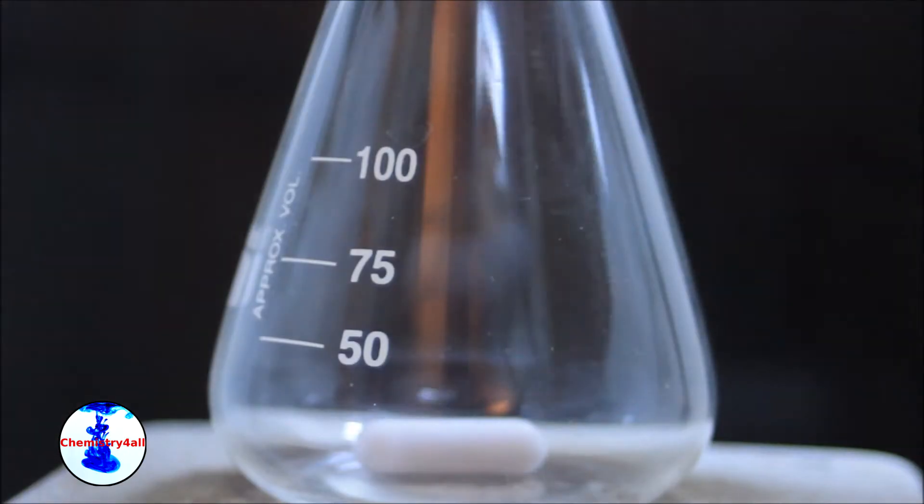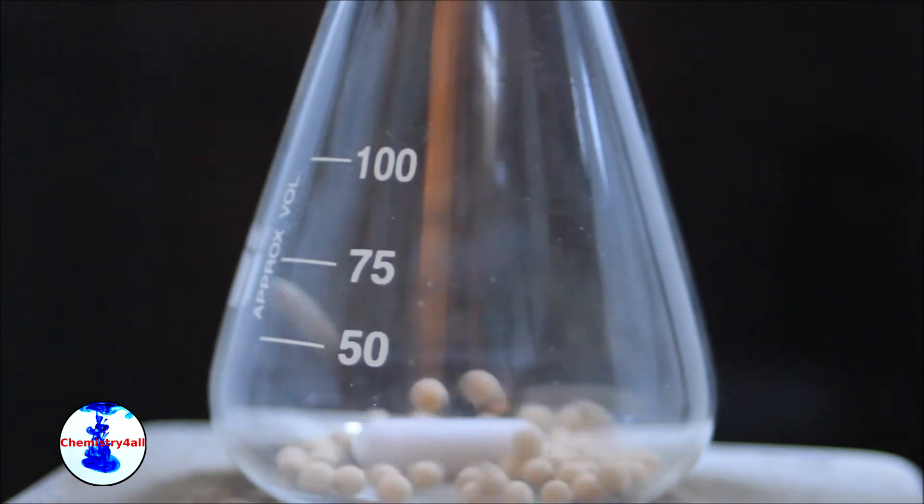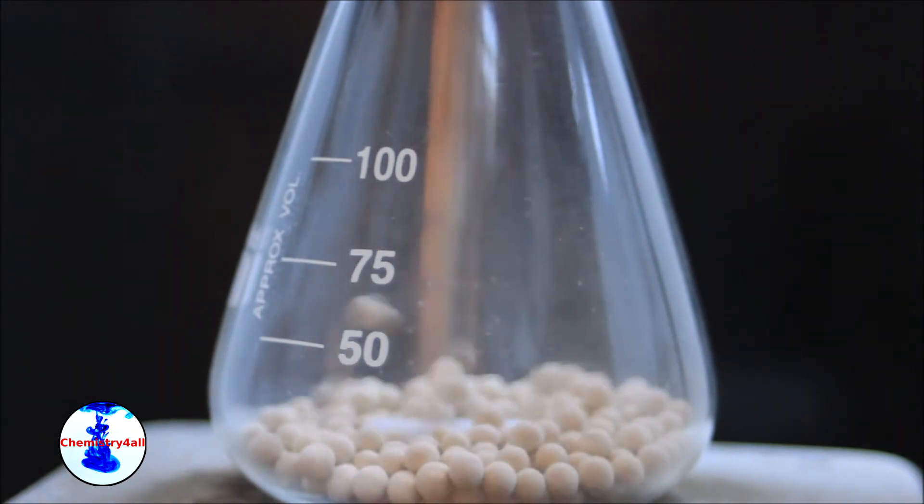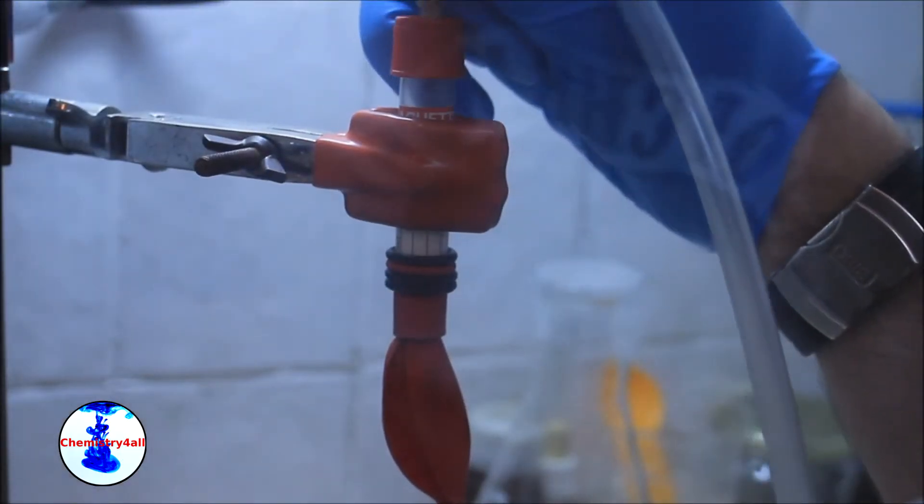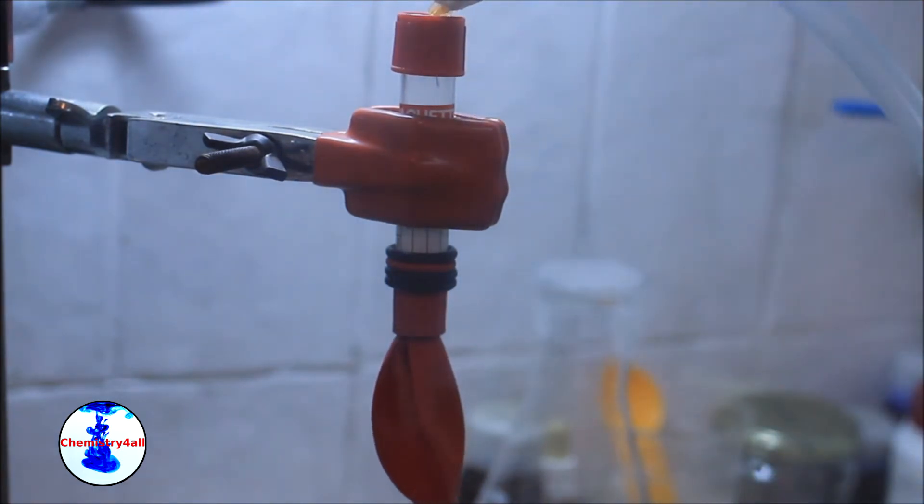Today, we will make anhydrous ethanol starting from regular 96% ethanol by making use of molecular sieves. Regular ethanol is usually fine for most applications.